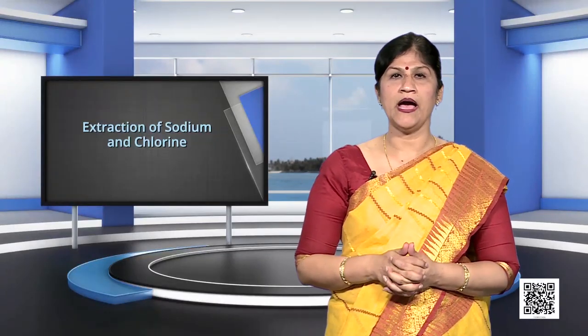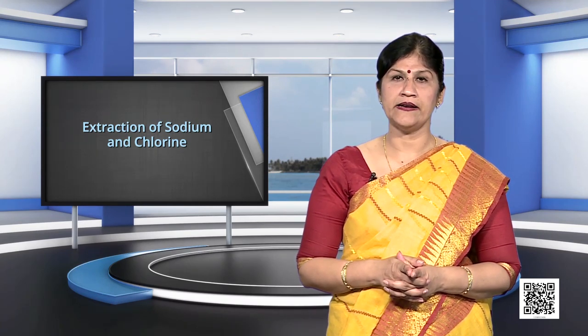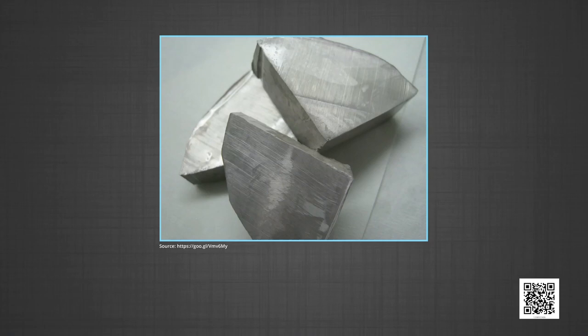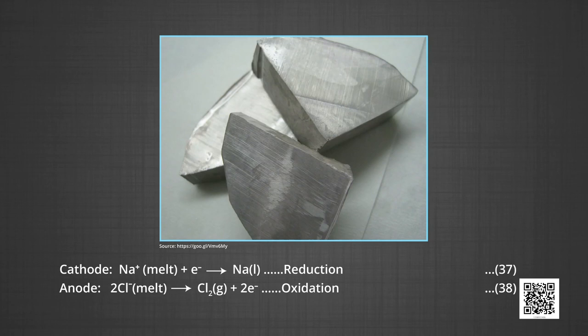Extraction of sodium and chlorine: if electrolysis of molten NaCl is carried out, sodium metal is produced at the cathode as the reduction product of sodium ions, and chlorine gas is obtained at the anode as the oxidation product of chloride. Sodium hydroxide and hydrogen are not produced in this case. At cathode: Na⁺ + e⁻ → Na (reduction). At anode: 2Cl⁻ → Cl₂ + 2e⁻ (oxidation).